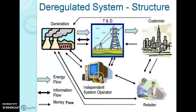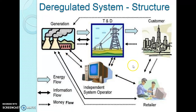As the figure shows, the Independent System Operator has information flow from the generation system, transmission system, and with the retailer and with the customers.